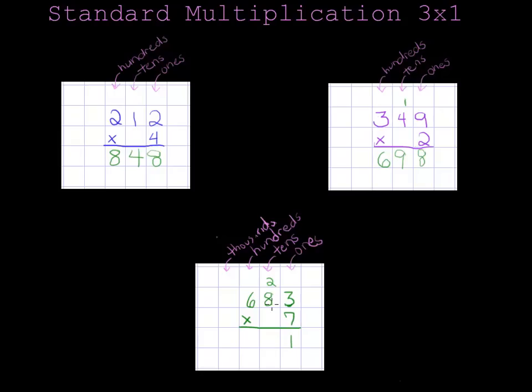7 times 8 is 56. But I can't forget this 2. When I add that on, I get 58. And I have to split that up as well. So I'll put the 8 down below and carry the 5. Now do you see the 58 that was split up?